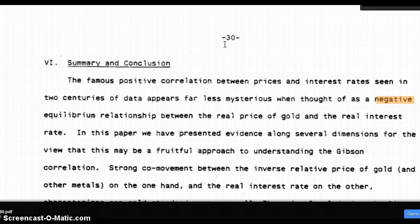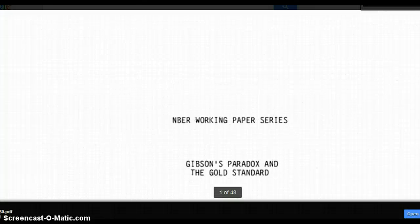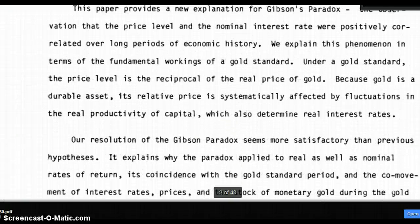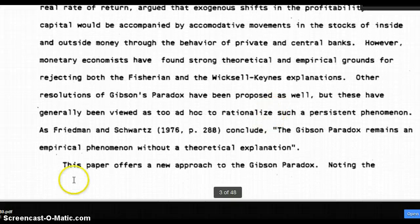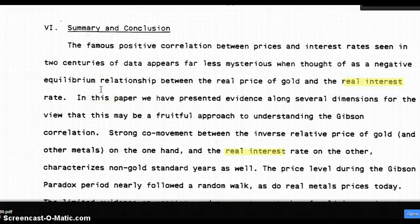I want to go into this paper by Larry Summers called Gibson's Paradox and the Gold Standard. It's a very long paper, and I just wanted to break down a few parts of it. I tried to find the best information showing how negative real interest rates, according to the author, would lead to higher gold prices.